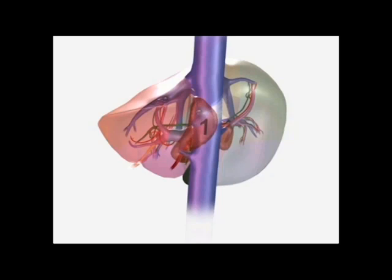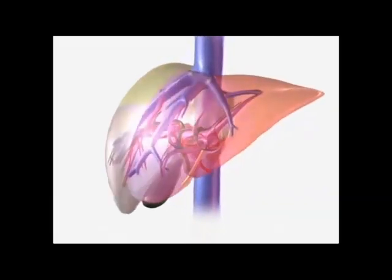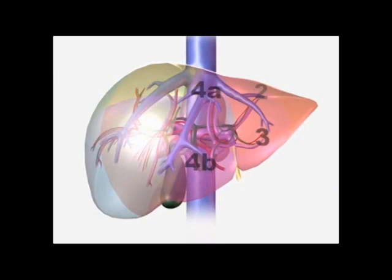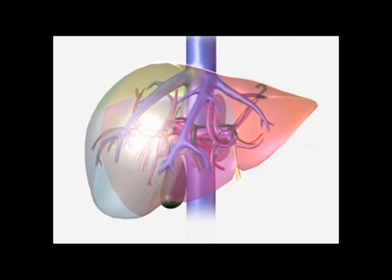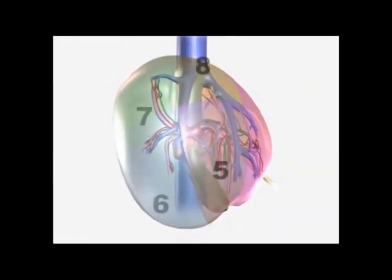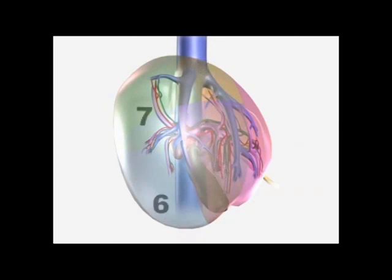The left portion of the caudate lobe lies in the lesser omental bursa and is covered anteriorly by the gastrohepatic ligament, which separates it from the left liver anteriorly. The left liver is composed of segments 2, 3, and 4; segment 4 has been further split into segments 4a and 4b based on independent inflow portal pedicles. The left liver is split in the plane of the left hepatic vein into an anterior and posterior sector. The right liver is split in the plane of the right hepatic vein into an anterior and posterior sector: the anterior sector contains segment 5 inferiorly, adjacent to the gallbladder, and segment 8 superiorly; the posterior sector contains segment 6 inferiorly and segment 7 superiorly.